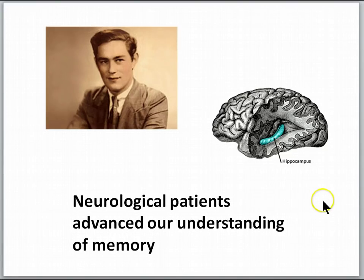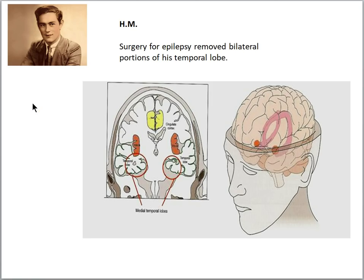Our understanding of human memory was greatly advanced by the unfortunate circumstances of neurological patients. One of the most famous neurological patients had the initials HM, and in the mid-1950s he was suffering from severe epilepsy — a neurological condition in which brain cells in certain parts of the brain are overly excitable and they cause seizures.